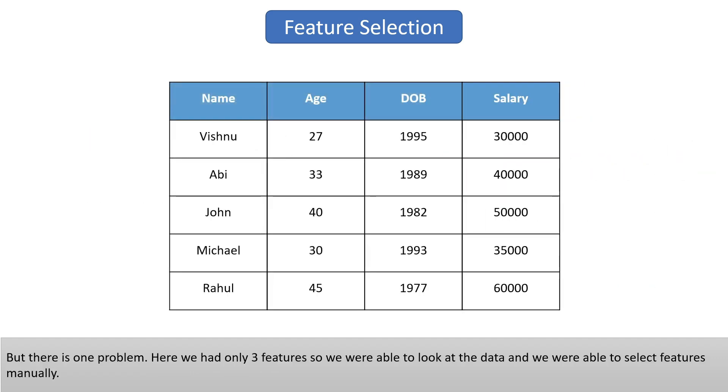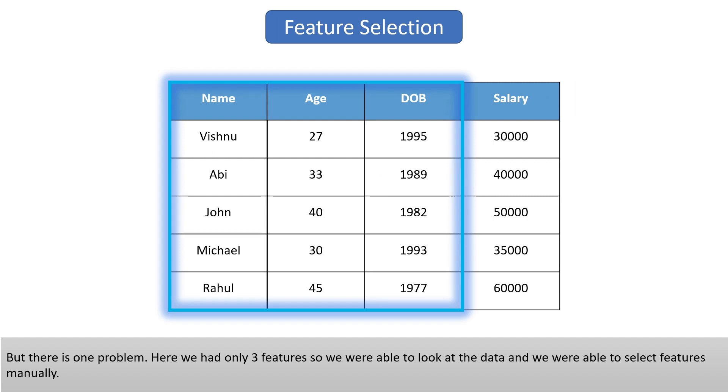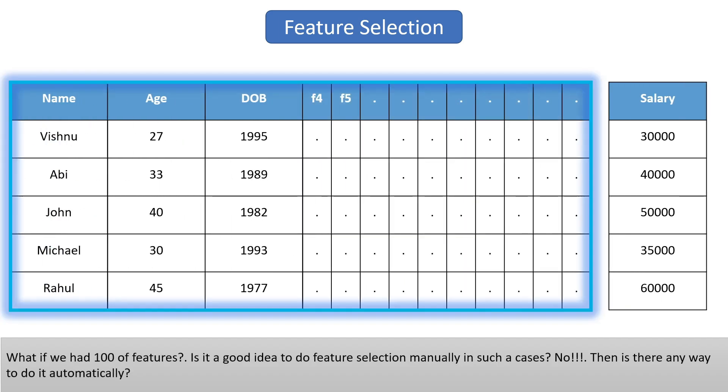But there's one problem. Here, we had only three features, so we were able to look at the data and do feature selection manually. What if we have hundreds of features? Is it a good idea to do feature selection manually in such cases? No.